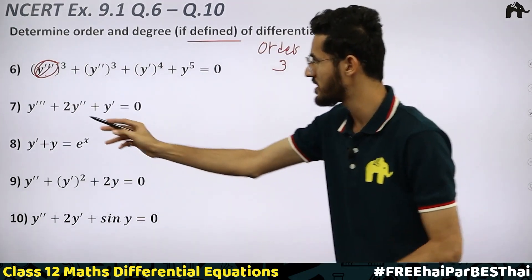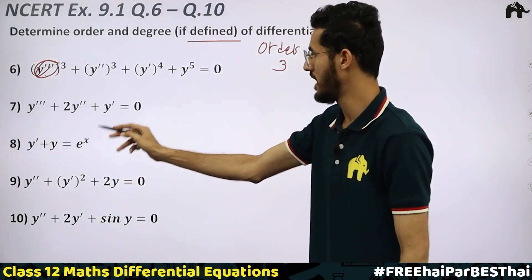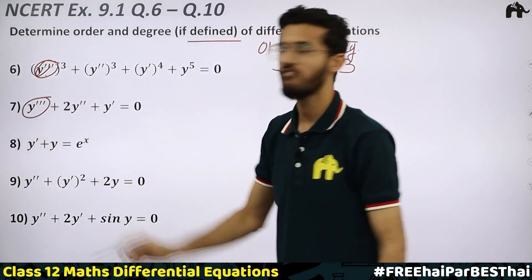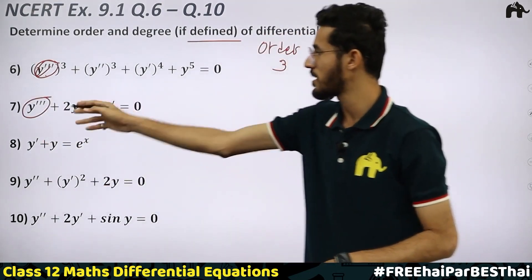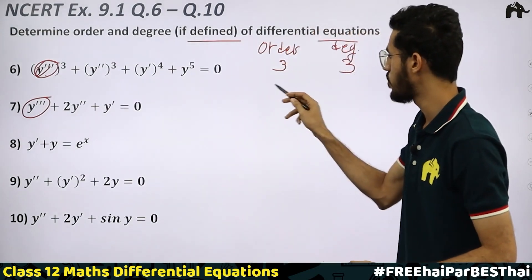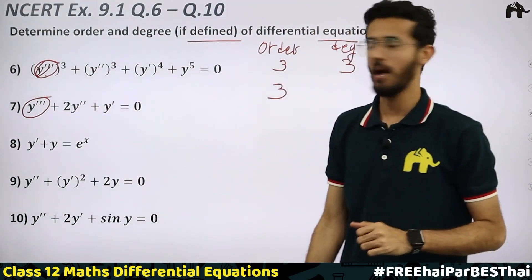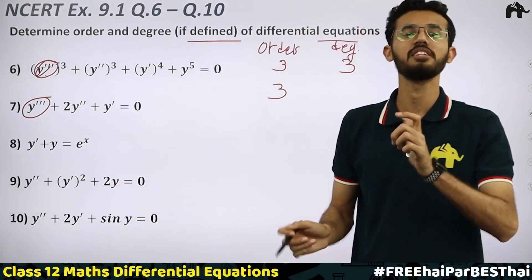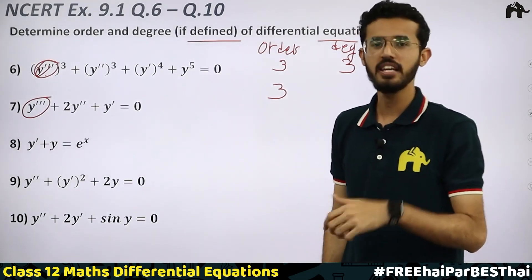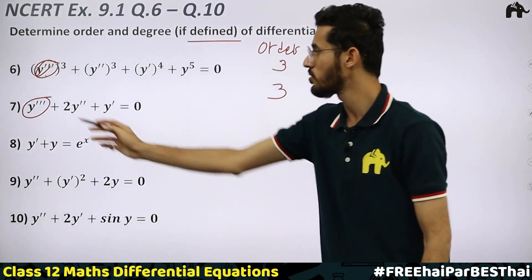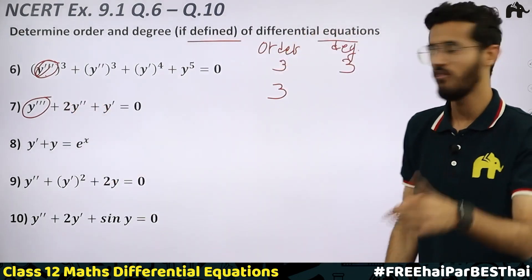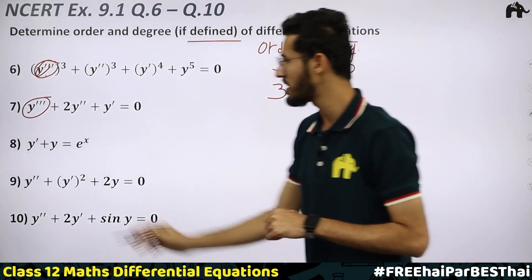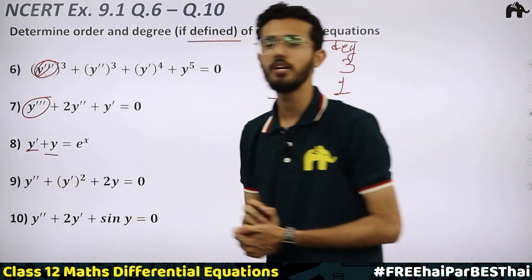Question 7: y‴ + 2y″ + y′ = 0. The highest order is y‴, so the order is 3. The degree is defined because no derivative is inside any function. The power of y‴ is 1, so the degree is 1.